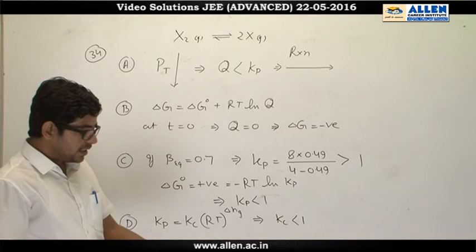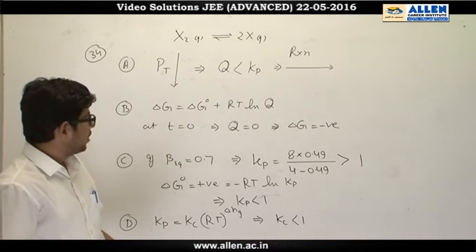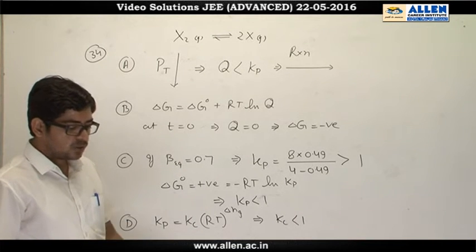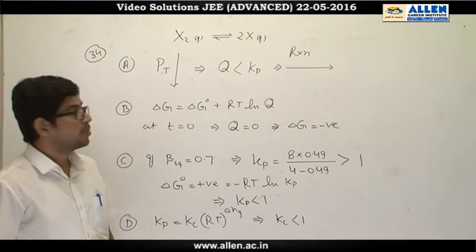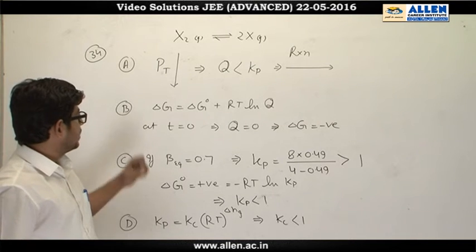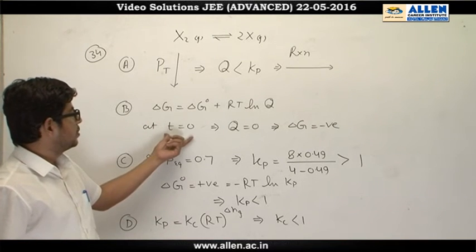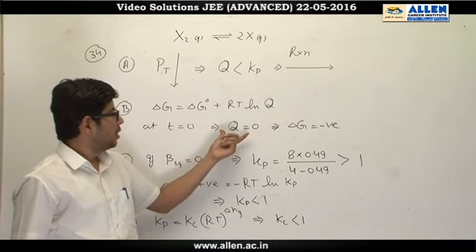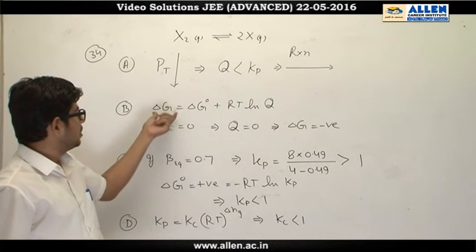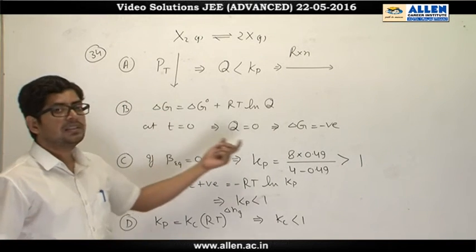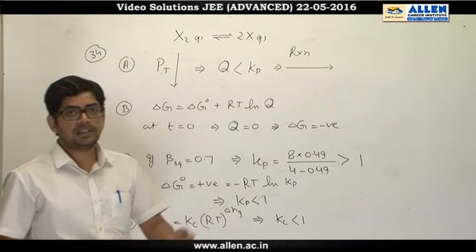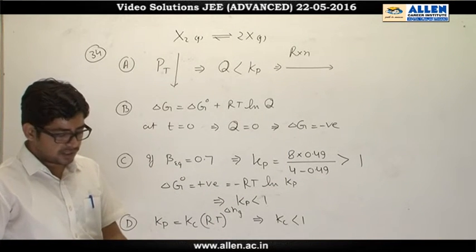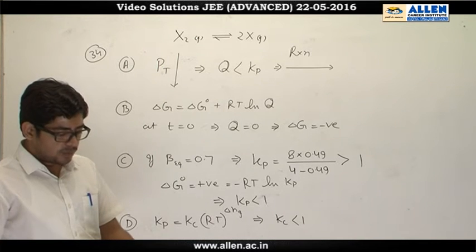Option B: At the start of reaction, dissociation of gas x₂ takes place spontaneously. At t = 0, reaction quotient Q = 0. Since Q < Kp, delta G is negative, meaning the reaction moves in the forward direction spontaneously. So Option B is also correct.